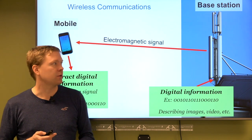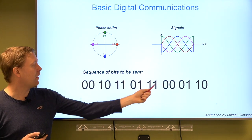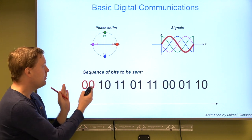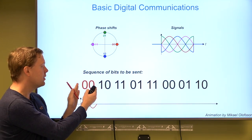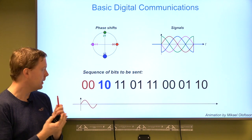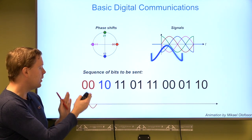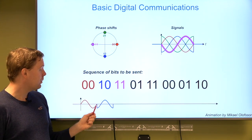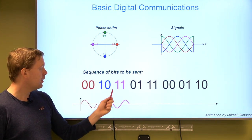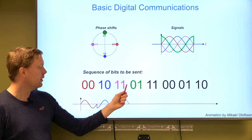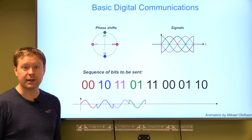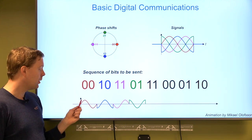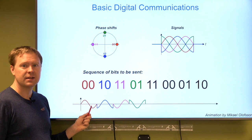How does this mapping work? Say we have a sequence of bits — zeros and ones — we chop it up into subparts, two bits at a time. Every time we send zero-zero we represent it with one signal, one-zero with another, one-one with a third, and zero-one with a fourth. We have four different options, all based on a sine wave with different time shifts.